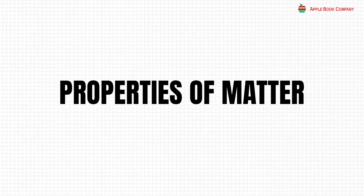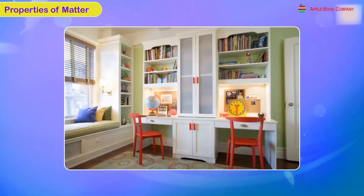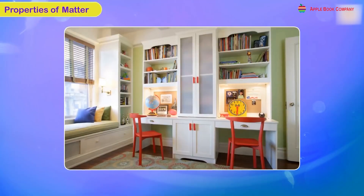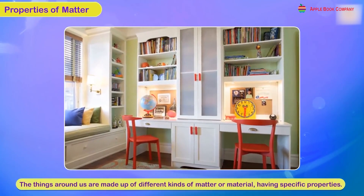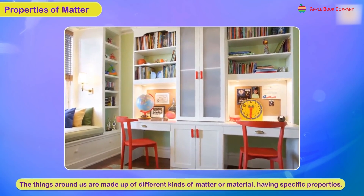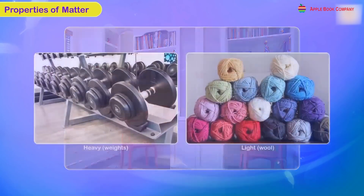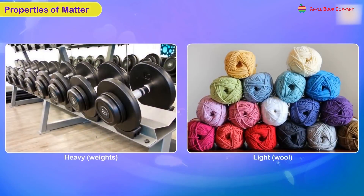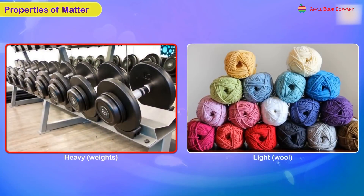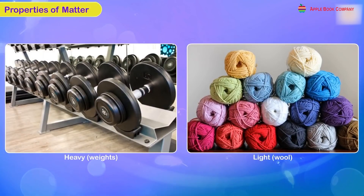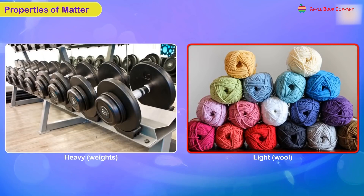Properties of Matter. We understand different things because they have different qualities or properties. These properties help us see what makes one thing different from another. We can tell what something is by looking at it — we see how big or small it is, what shape it has, and what it looks like.